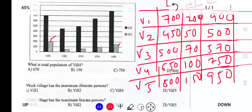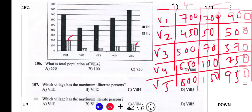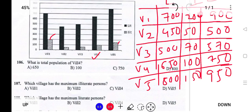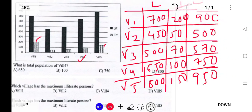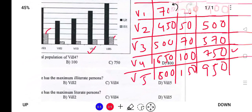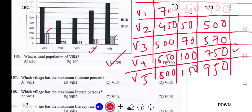Question 1: What is the total population of Village 4? The total population includes both literate and illiterate persons. From our table, Village 4 has 650 literates and 100 illiterates. So the total population of Village 4 is 750.